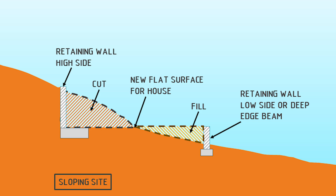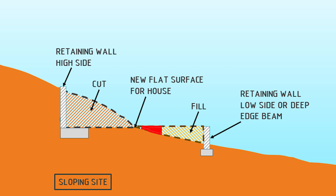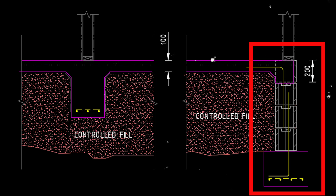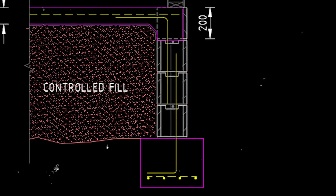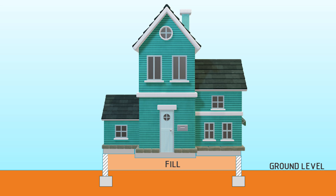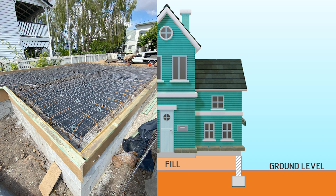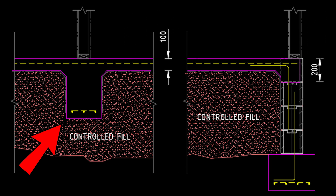Typically, this system is used in two situations. The first is on a cut and fill sloping site where we cut the soil from the high side and place it on the low side to form a flat surface. The deep edge beam retains the fill under the slab and is generally constructed of reinforced concrete or masonry. The second situation is on a flat site where the floor height is above the ground level. This form of footing can be used on class M sites, and AS2870 allows the internal beams and slab to be founded on controlled fill.